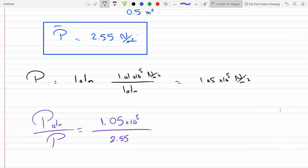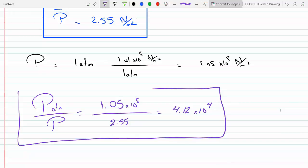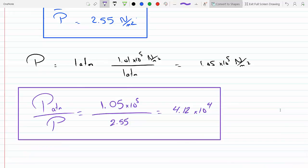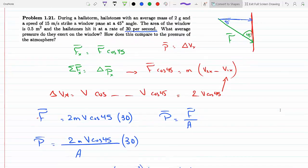So that's almost 40,000 or more than 40,000 times. The pressure of a hailstone is almost insignificant compared to the atmospheric pressure. That concludes this problem.